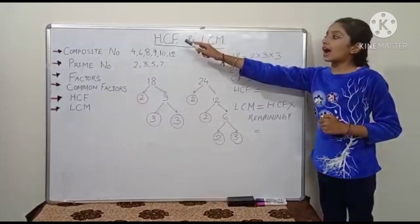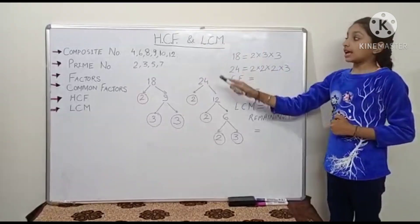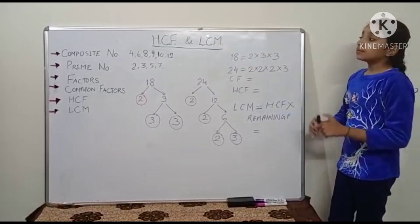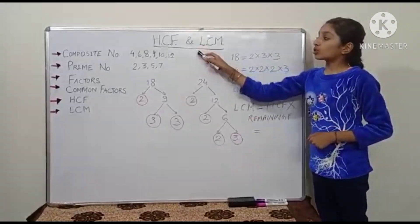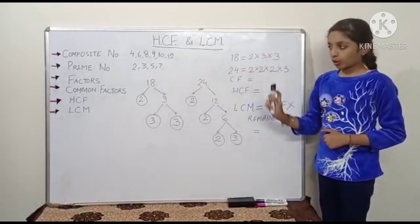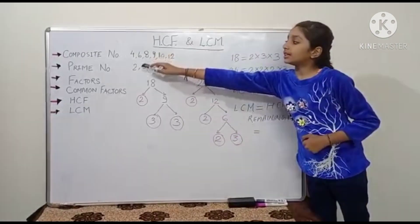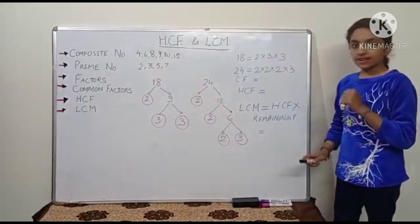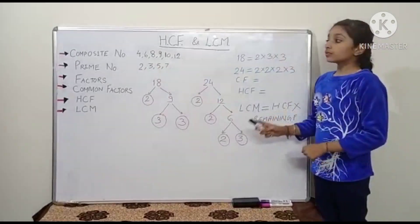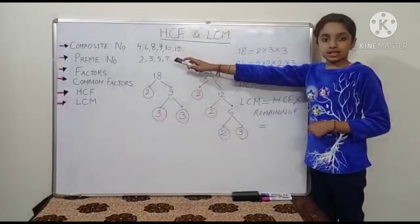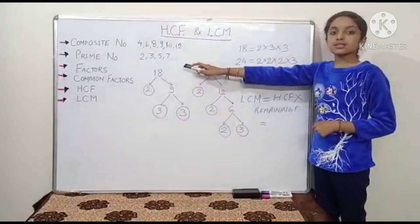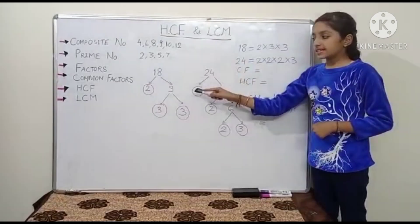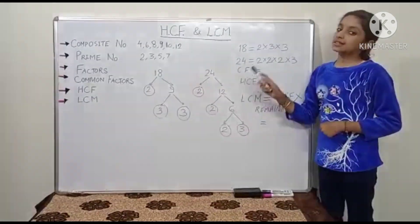HCF means Highest Common Factor and LCM is Lowest Common Multiple. But before talking about these two main points, we have to look at these six points: composite numbers, prime numbers, factors, common factors, HCF, and then lastly LCM.